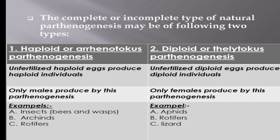The second type is diploid or thelytoky parthenogenesis. In diploid parthenogenesis, young individuals develop from the unfertilized diploid egg. Only females are produced by this method. Examples include aphids, rotifers, and lizards. Some species of wasps produce alternating parthenogenetic generations, one of which develops from unfertilized eggs.